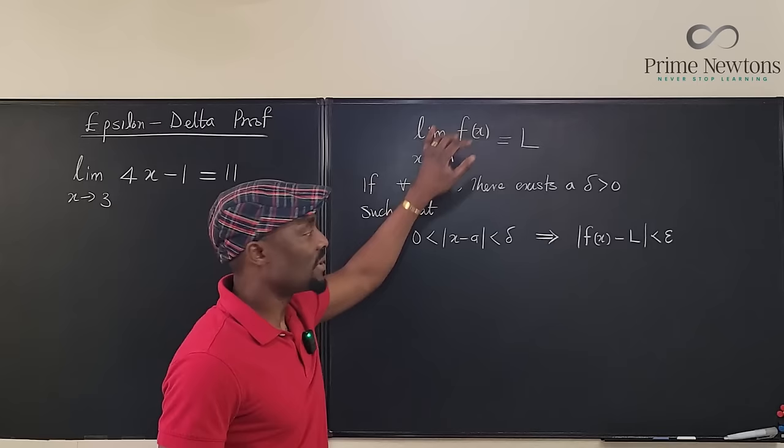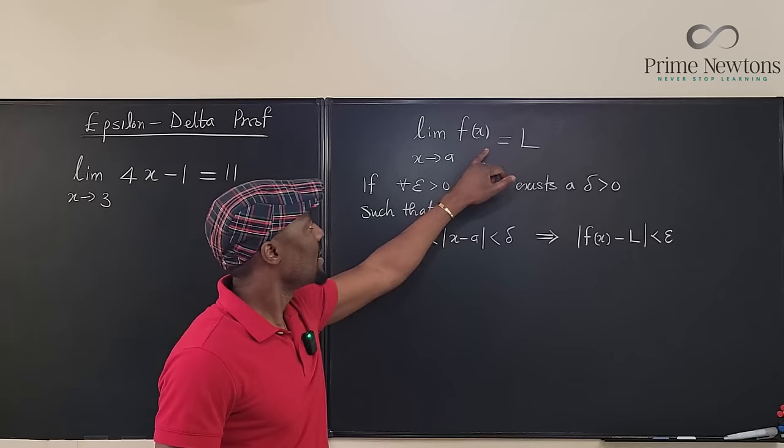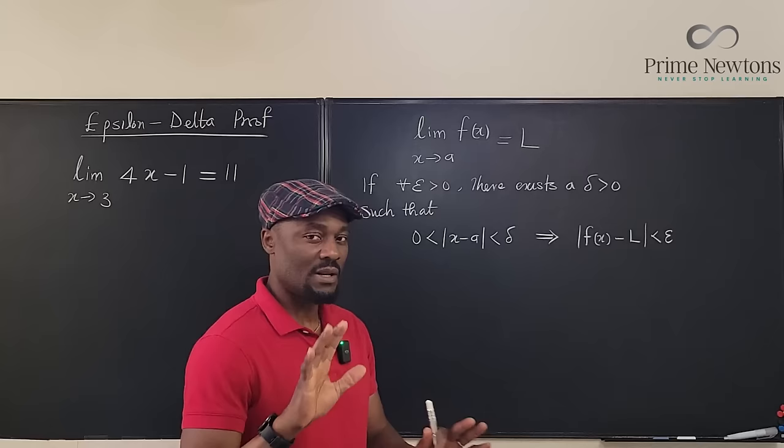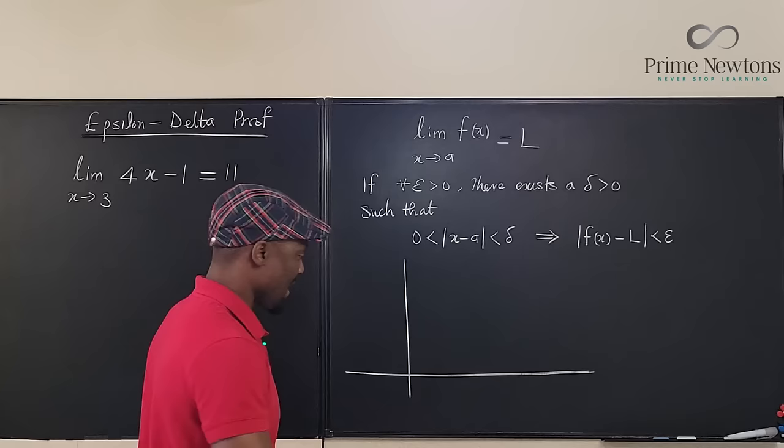The easy part is: the limit of any function as x approaches a is equal to L. The only reason we can claim that the limit is L is if for all epsilon — let's explain what epsilon is. So here you have a graph and here you have a function.